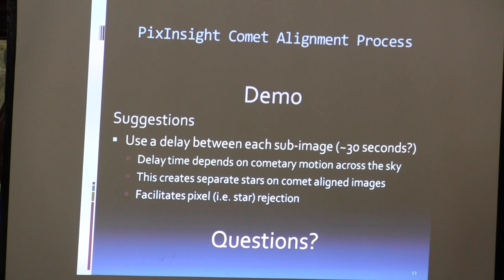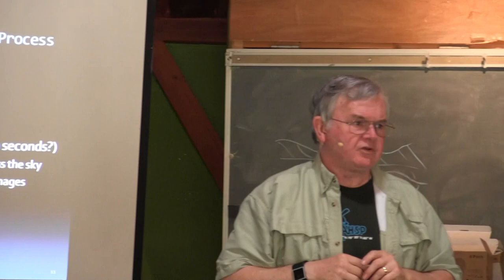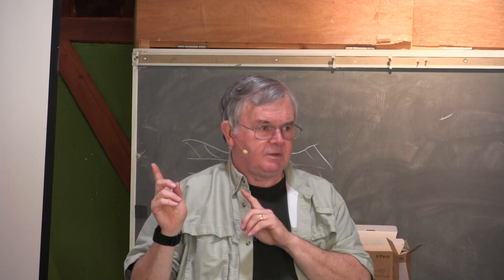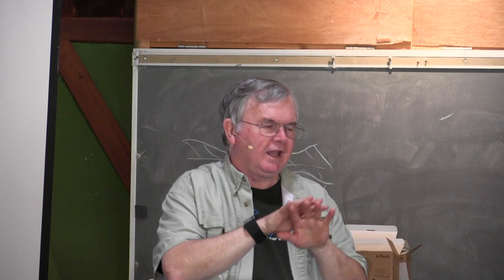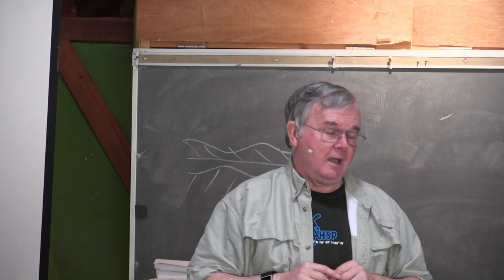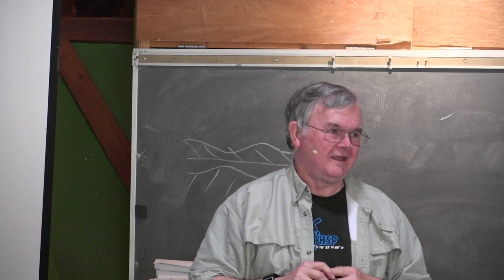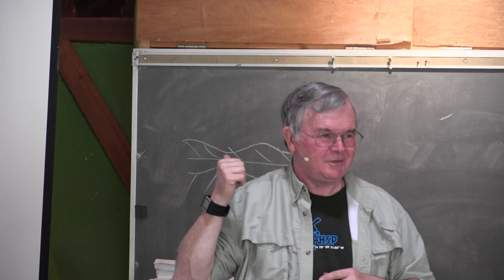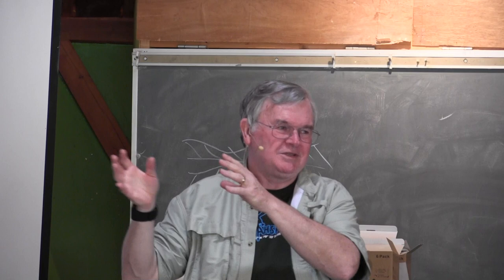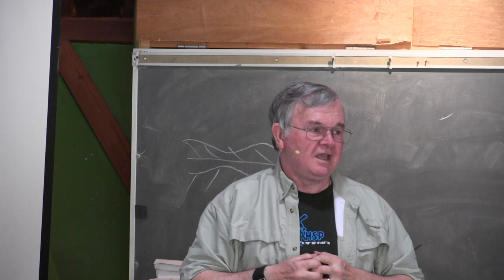The question is whether I have any experience guiding on the comet itself so that the subs have the comet at the center. The answer is no — I use a guide scope and I've never tried to identify the head of the comet in the guide scope. The interesting part is that with PixInsight you don't need to do that, because it will automatically align on all the stars. There are a lot of places in processing where you can get confused about which set of subs you're working on, so I have to be very careful about naming my folders.